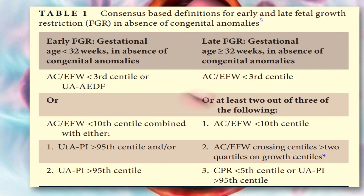This table shows the consensus-based definitions for early and late fetal growth restriction in the absence of congenital anomalies, according to the RCOG 2024 guideline. Early FGR means gestational age less than 32 weeks. In this condition, the abdominal circumference or estimated fetal weight is less than the 3rd centile, or the umbilical artery shows absent end-diastolic flow, or the AC/EFW is less than the 10th centile combined with uterine artery pulsatility index greater than the 95th centile and/or umbilical artery pulsatility index greater than the 95th centile.